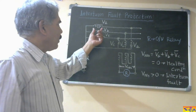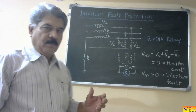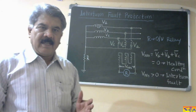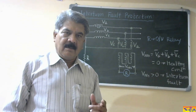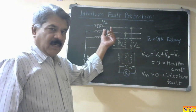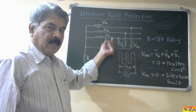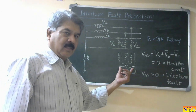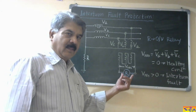Now, when an internal fault occurs — let us say in phase A — a few turns of the winding get short-circuited. So the induced EMF in that phase of the winding reduces, since the induced EMF equation is proportional to the number of turns. The induced EMF will reduce, so Va plus Vb plus Vc will no longer be zero, and we get some voltage across this open delta. If this voltage is higher than the pickup value of the over-voltage relay, then the relay trips.